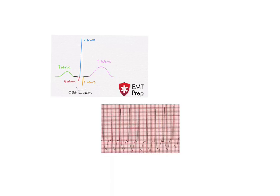Next we're going to talk about something called supraventricular tachycardia, or SVT. SVT is an extremely fast heart rhythm, usually above 150 beats per minute. When the heart beats that fast, the P waves become unreadable as they're obscured by the T wave. As you can see here, the P wave is not discernible anywhere on this EKG strip.